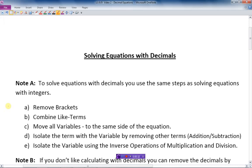Let's just review them quickly here. The first step was removing the brackets using the distributive property, then we combined like terms on the same side of the equal sign. Step C, move all variables to the same side of the equation, usually the left hand side. Step D, isolate the term with the variable by removing other terms through addition or subtraction. And lastly we isolate the variable by using the inverse operations of multiplication and division to remove the coefficient.